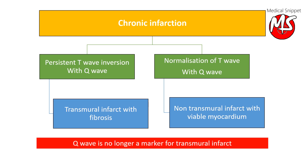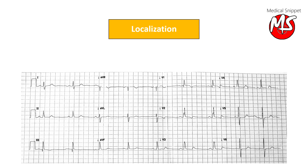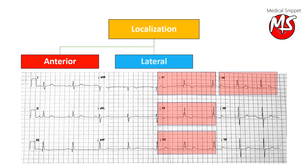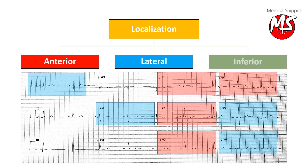Pathological Q waves are no longer a marker for transmural infarct. Regarding localization of myocardial infarction in ECG: in anterior wall infarction, ECG changes are seen in V1, V2, V3, and V4 leads. In lateral wall infarction, changes are seen in lead I, lead AVL, V5, and V6. In inferior wall infarction, the changes are seen in lead II, lead III, and lead AVF.